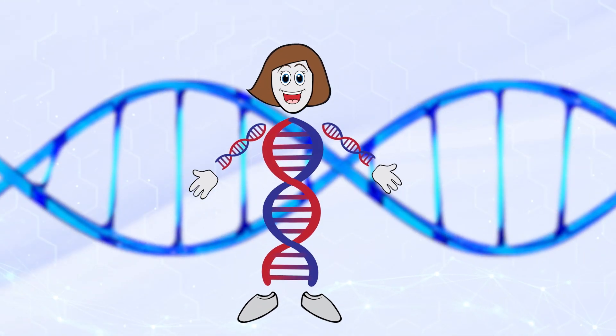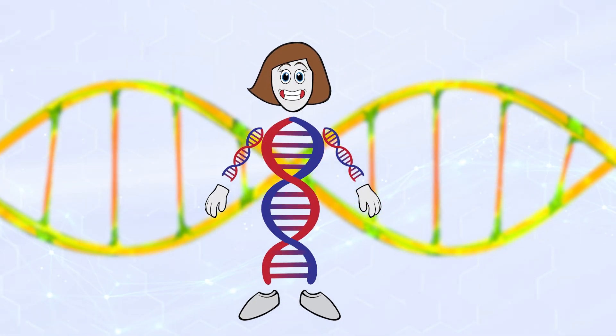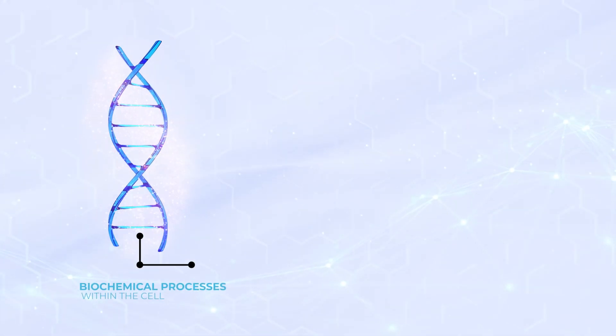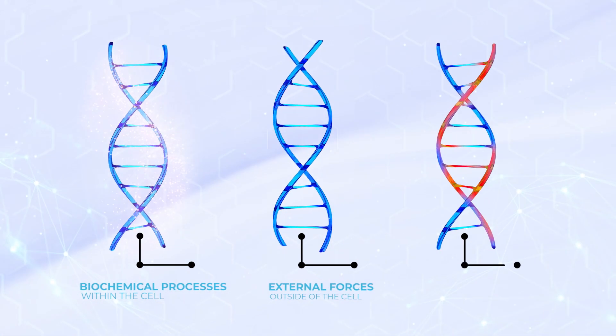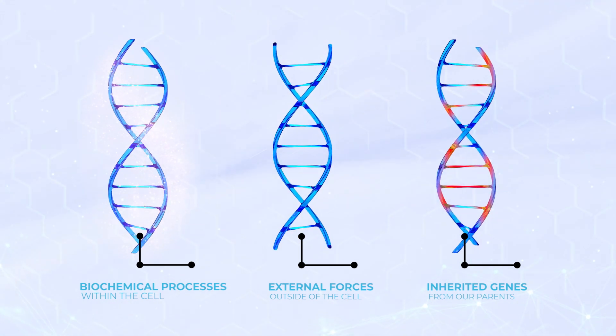Sometimes there is a change, also known as a mutation in the gene from the original copy. This mutation or defect in the gene causes it not to work properly. Mutations can come from biochemical processes within the cell, something outside of the cell, or what we inherit from our parents. Genes that aren't working properly can have serious consequences.